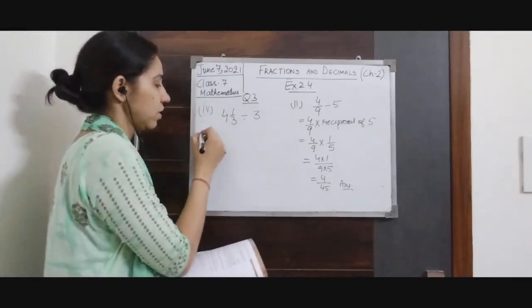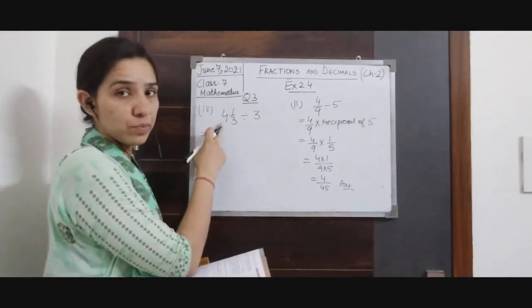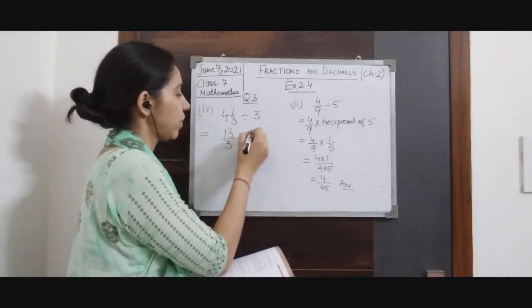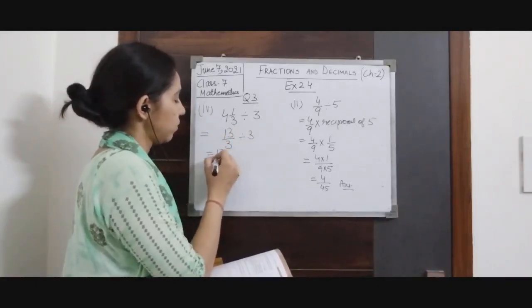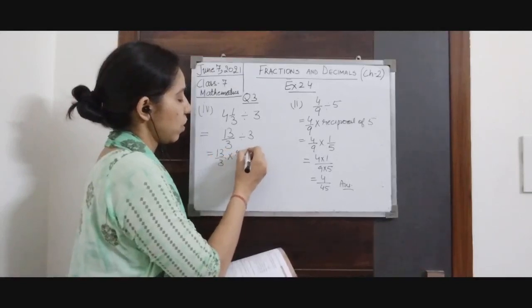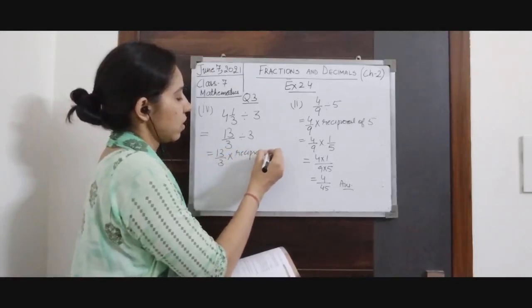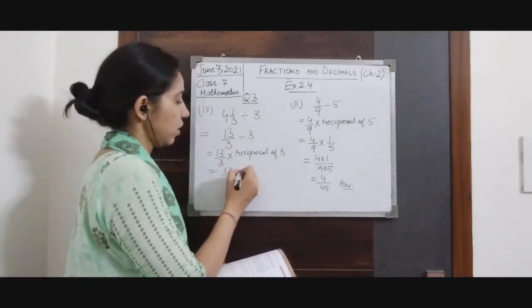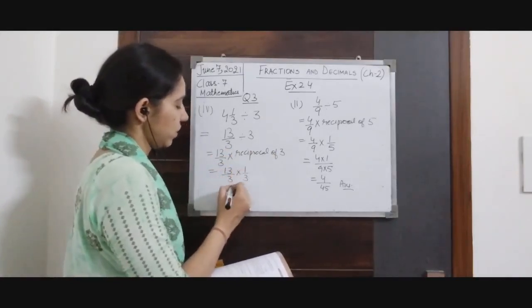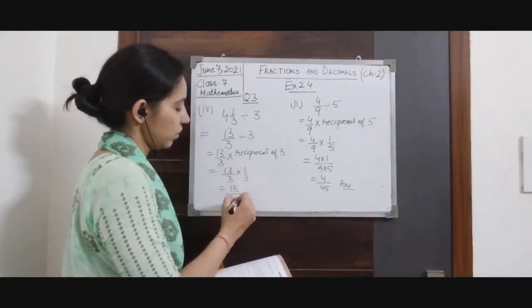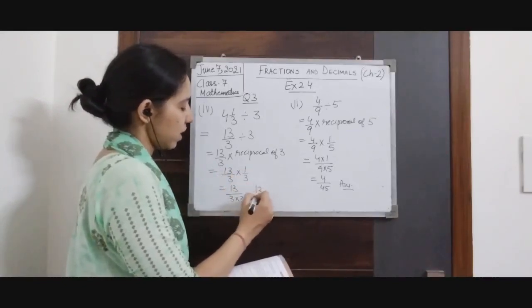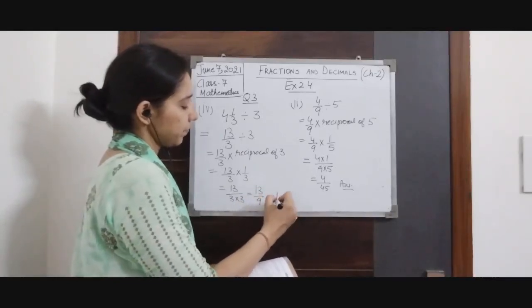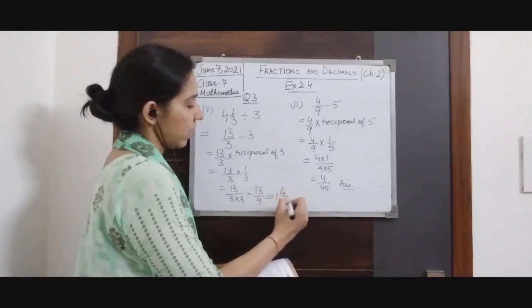Part 4: convert the mixed fraction to improper fraction first: 4 and 1/3 becomes 13/3. Then 13/3 divided by 3 equals 13/3 × reciprocal of 3 = 13/3 × 1/3 = 13 × 1 over 3 × 3 = 13/9. It is an improper fraction; convert to mixed fraction: 1 and 4/9. This will be our answer.